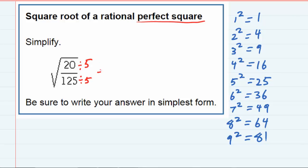So we can simplify our radical. 20 divided by 5 at the top is 4, and 125 divided by 5 at the bottom is 25.